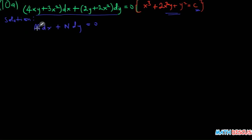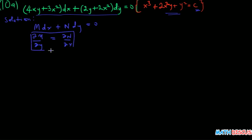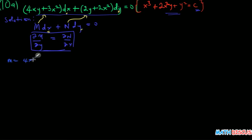The criterion for a differential equation written in this format to be exact is that it must satisfy: the partial derivative of M with respect to y must equal the partial derivative of N with respect to x. Comparing our equation, this is my M and this is my N, because this term goes with dx and this term goes with dy.